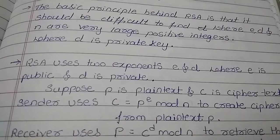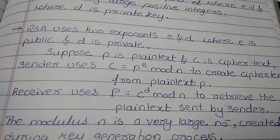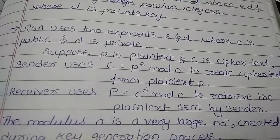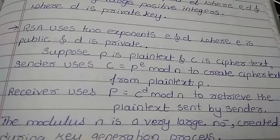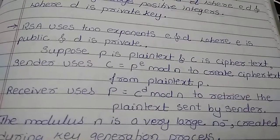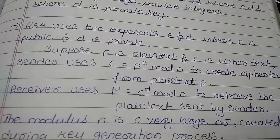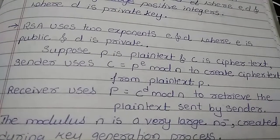If I wanted to encrypt the plain text P and C is the cipher text, then the sender uses the formula C equals P to the power E mod N to create the cipher text from the plain text. At the receiving end, the receiver uses the formula P equals C to the power D mod N to retrieve the plain text.